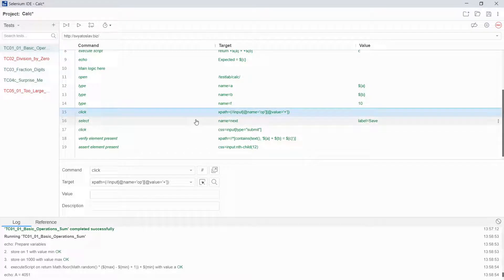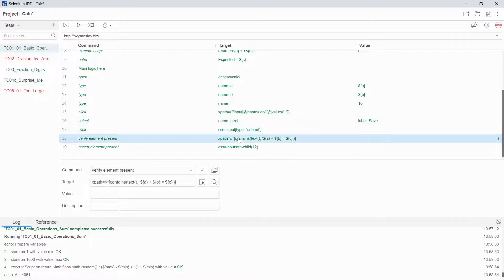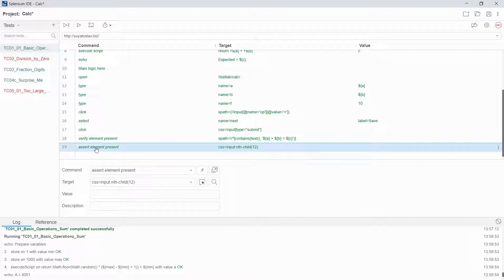Here we are clicking something. We are selecting some element from select list. Here we once again clicking something and we are verifying that some element is present. And here you see this is the last command.